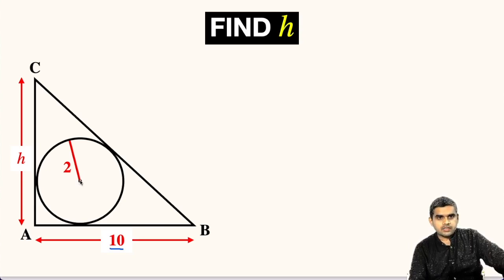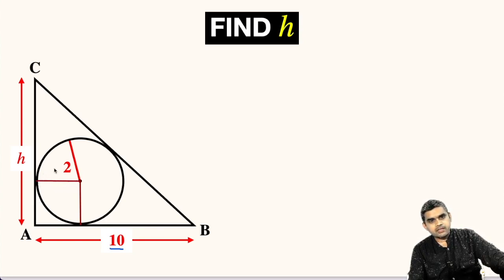First of all, let us join the center of the circle with the point of contact of AB with the circle. Likewise, let us connect the center of the circle with the point of contact of this circle with side AC. This angle will be 90 degrees, and this angle will also be 90 degrees.